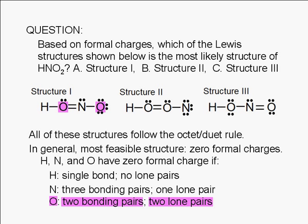Therefore, structure 3 is the only structure shown here where all the atoms have a zero formal charge. The correct answer is C, structure 3.